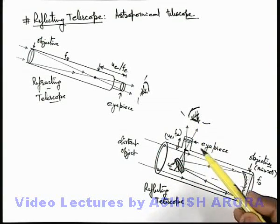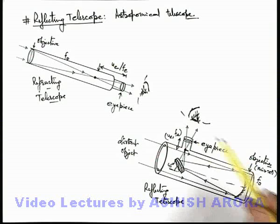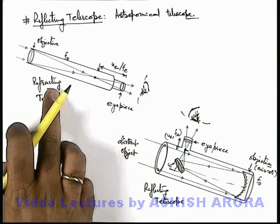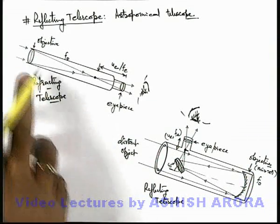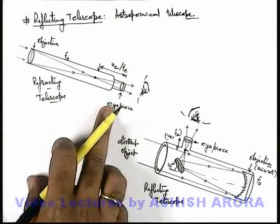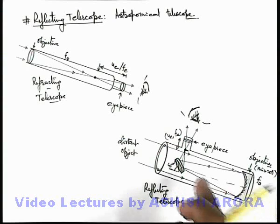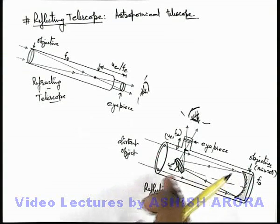And here, another advantage of using this reflection type telescope or objective mirror is, this will be relatively free from chromatic aberrations, which are there in case of refracting telescope due to the use of 2 lenses. So here, due to the use of this mirror, the chromatic aberrations are also decreased.